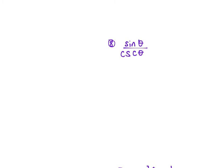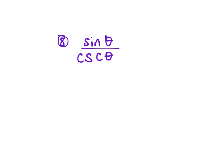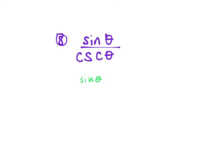Number 8: sine over cosecant. Change everything to sine and cosine. Cosecant changes to 1 over sine. Keep the top, change to multiplication, flip the bottom. Multiply across: sine times sine is sine², over 1. So we get sine² θ.